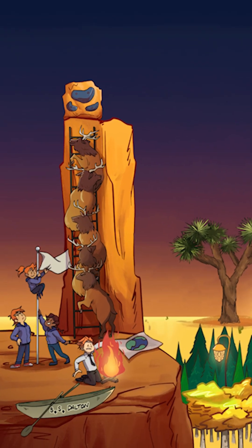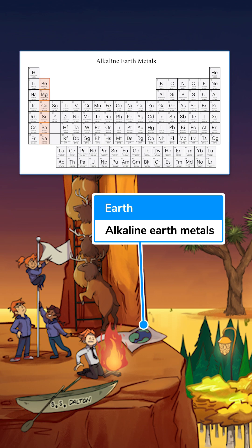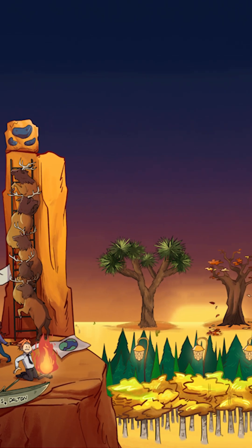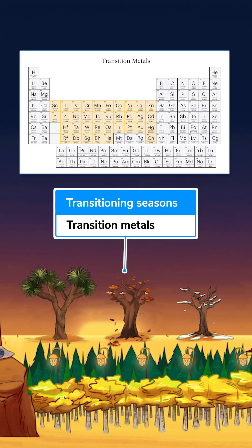That map of the earth right next to the elk line should remind you that group 2 elements are called alkaline earth metals. And these trees are transitioning from summer into winter, because groups 3 to 12 are called transition metals.